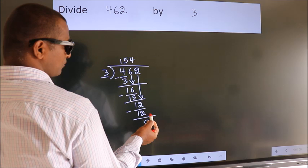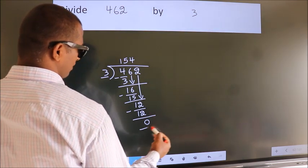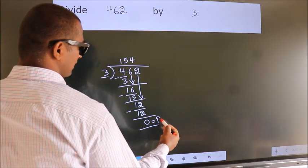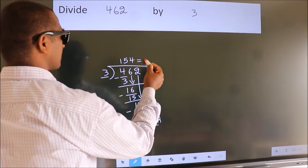No more numbers to bring it down. So, we stop here. This is our remainder. This is our quotient.